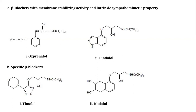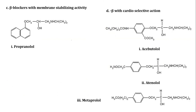Classification of beta adrenergic blocker drugs. First are beta blockers with membrane stabilizing activity and intrinsic sympathomimetic properties; examples are oxyprenolol and pindolol. Non-specific beta blockers include timolol and nadolol. Beta blockers with membrane stabilizing activity include propranolol.